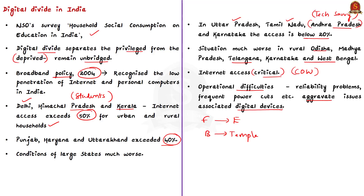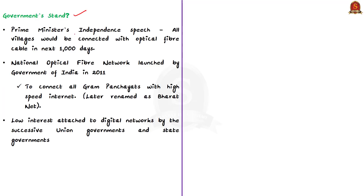The Prime Minister acknowledged the digital divide and announced that all villages would be connected with optical fiber cable in the next 1000 days. In this context, the government in 2011 launched the National Optical Fiber Network to connect all Gram Panchayats with high-speed internet. This program was later renamed as BharatNet. With the recent PM announcement, now all villages — not just Gram Panchayats — will be connected with high-speed internet.